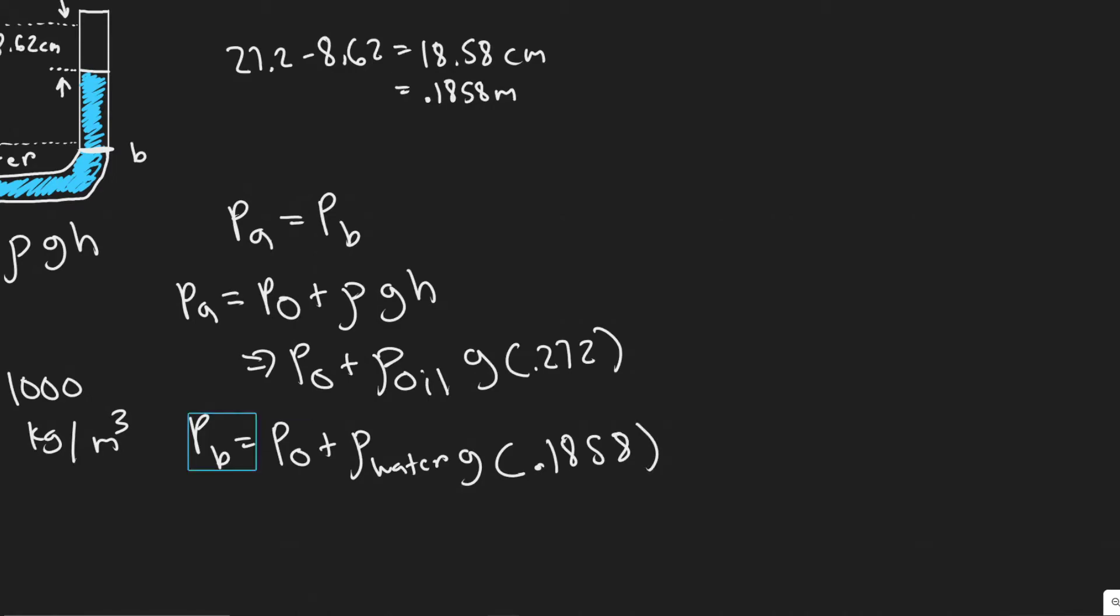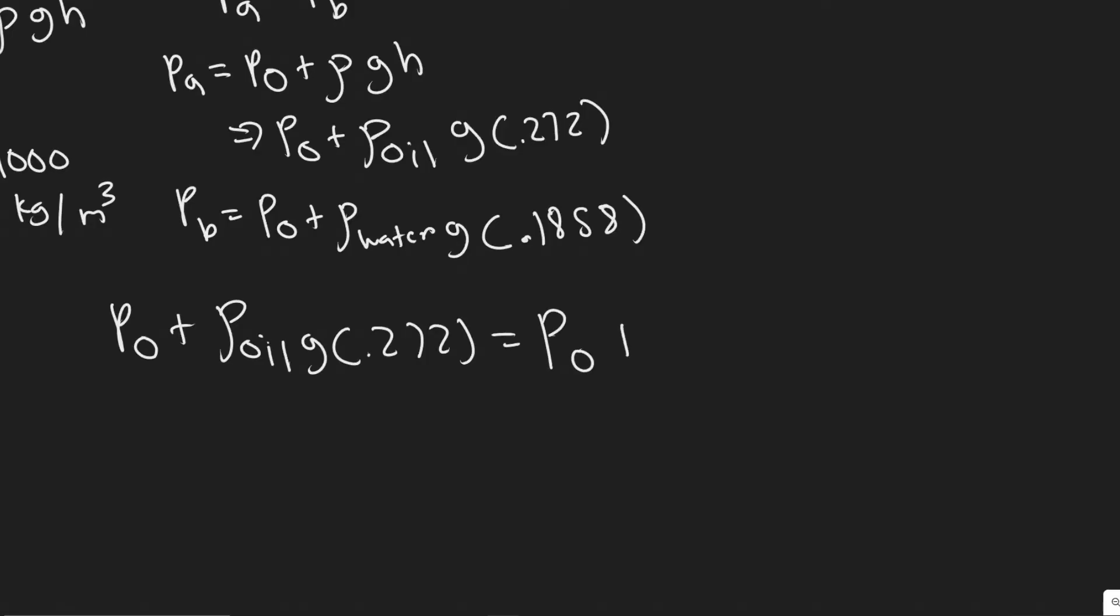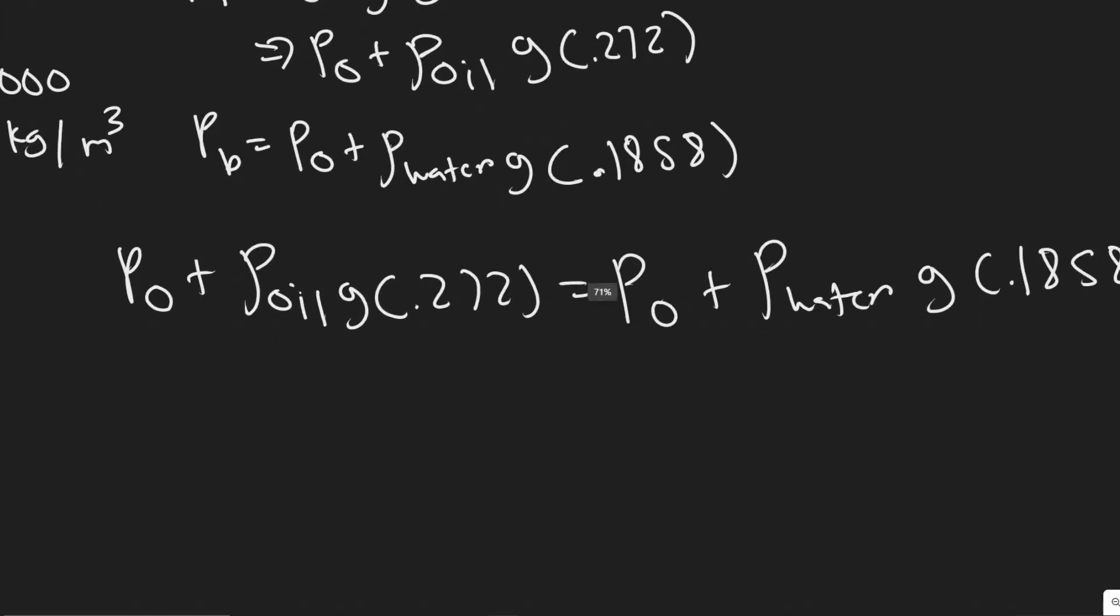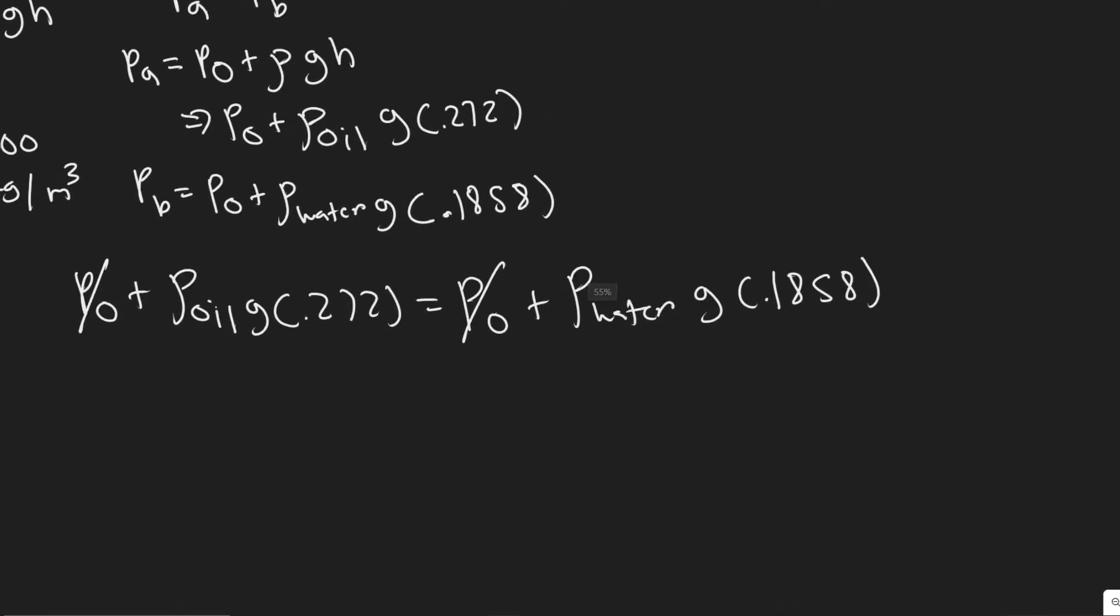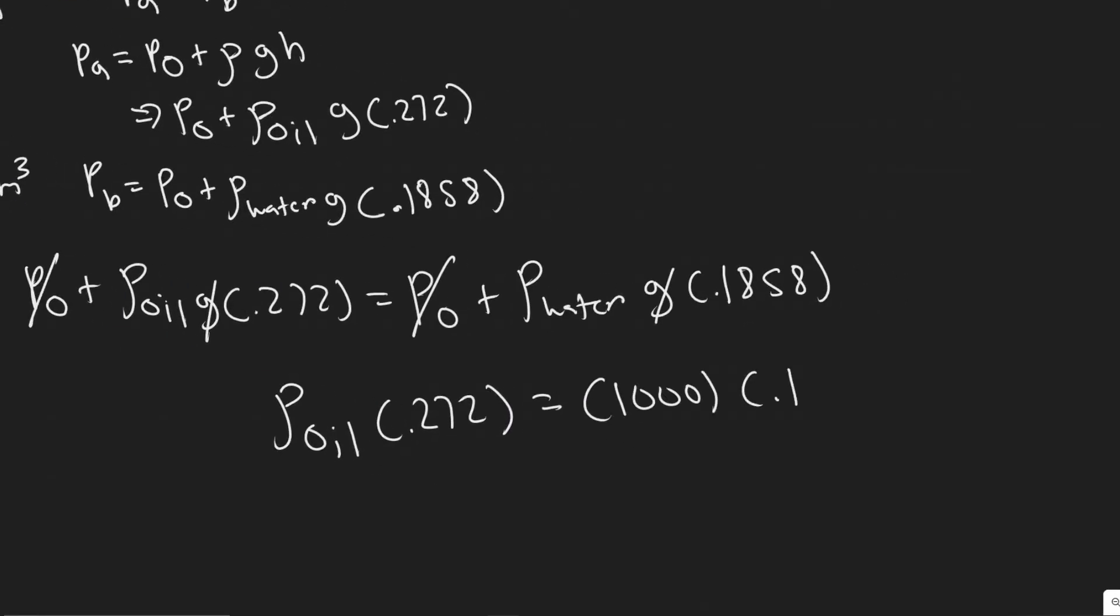And so notice we have two formulas, Pa and Pb. And so what we're going to do now is just set them equal to each other. So I'm just taking Pa right now and setting it equal to Pb. So the pressure at point A is equal to the pressure at point B. G times 0.1858. And so notice here that you have your initial pressure is going to cancel. Your Gs are going to cancel. And so we're just going to have the density of the oil times 0.272 equals the density of the water, rho, multiplied by 0.1858. And so let me actually write this value in. So this was 1,000. Remember the density of water I wrote was 1,000. So we have 1,000 times 0.1858.